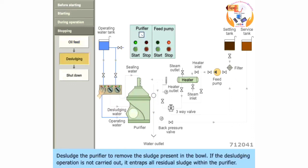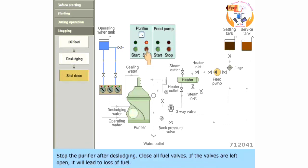Desludge the purifier to remove the sludge present in the bowl. If the desludging operation is not carried out, it entraps all residual sludge within the purifier. Stop the purifier after desludging. Close all fuel valves. If the valves are left open, it will lead to loss of fuel.